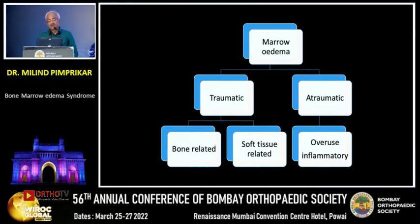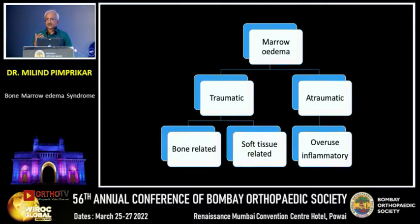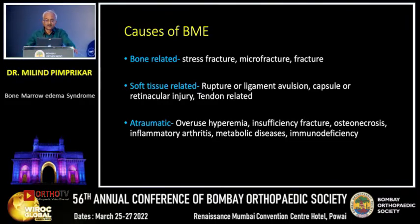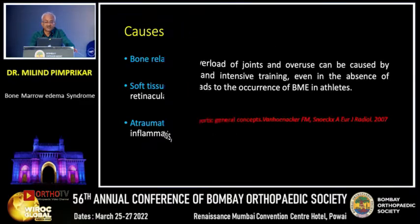Bone marrow edema could be traumatic or atraumatic. Traumatic could be bone-related or soft tissue-related. Atraumatic could be overuse, inflammatory, AVN, and so on. The causes: bone-related are stress fractures, microfractures, or frank fractures. Soft tissue-related could be rupture or avulsion of ligaments, capsule or retinacular injuries, and some could be tendon-related. Atraumatic causes include overuse, hyperemia, insufficiency fractures, osteonecrosis, inflammatory, metabolic, and immunodeficiency as well.